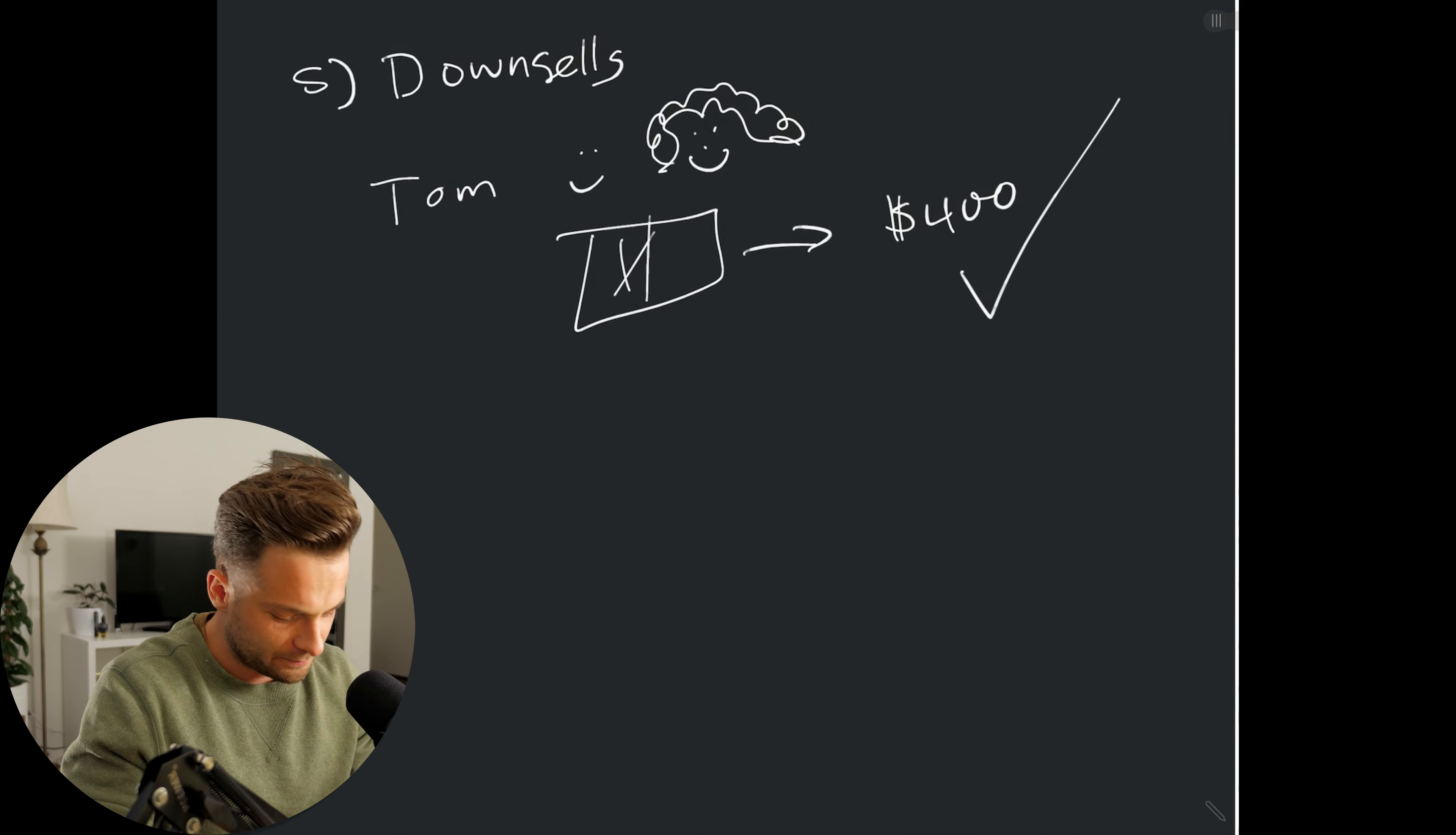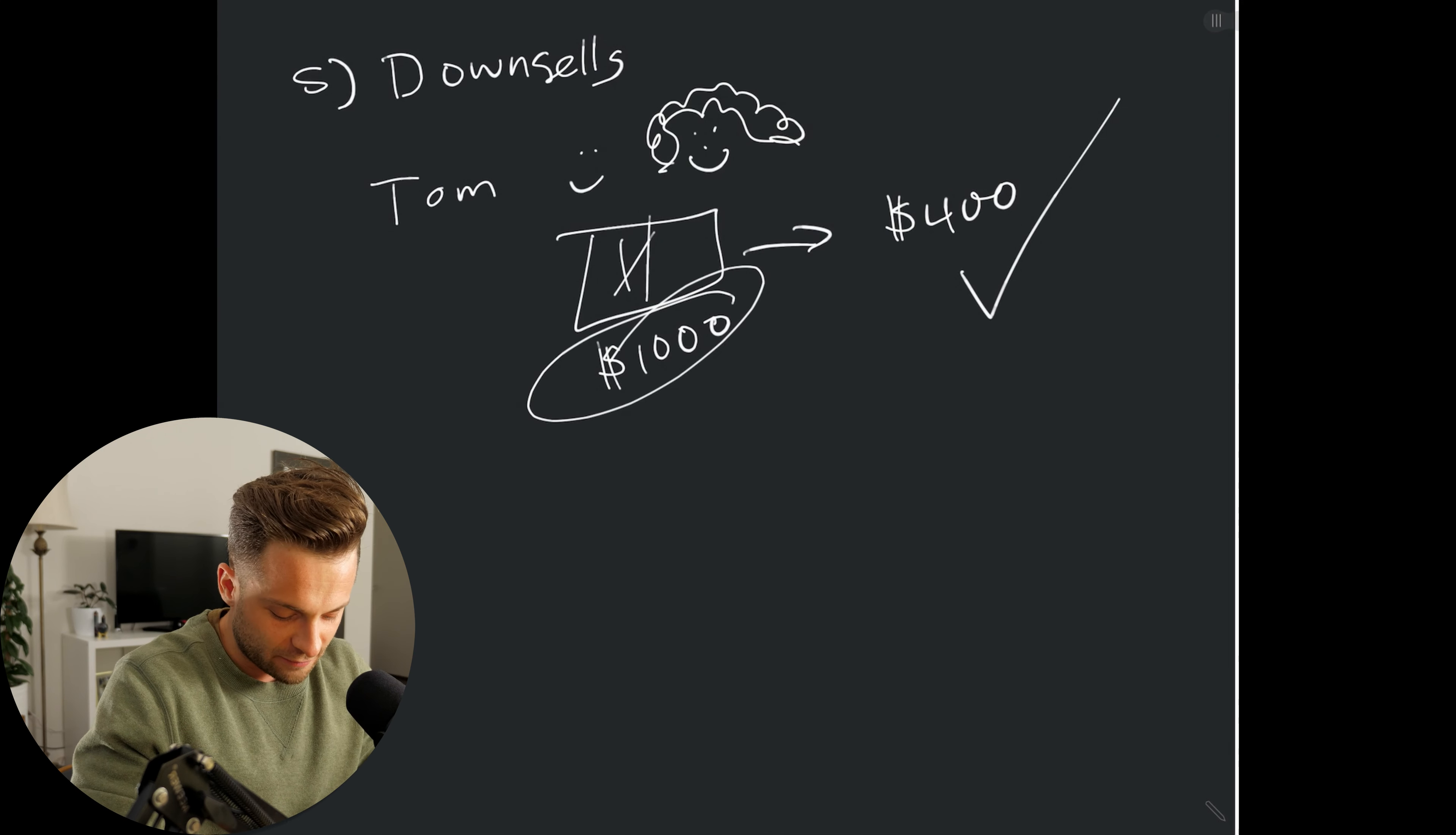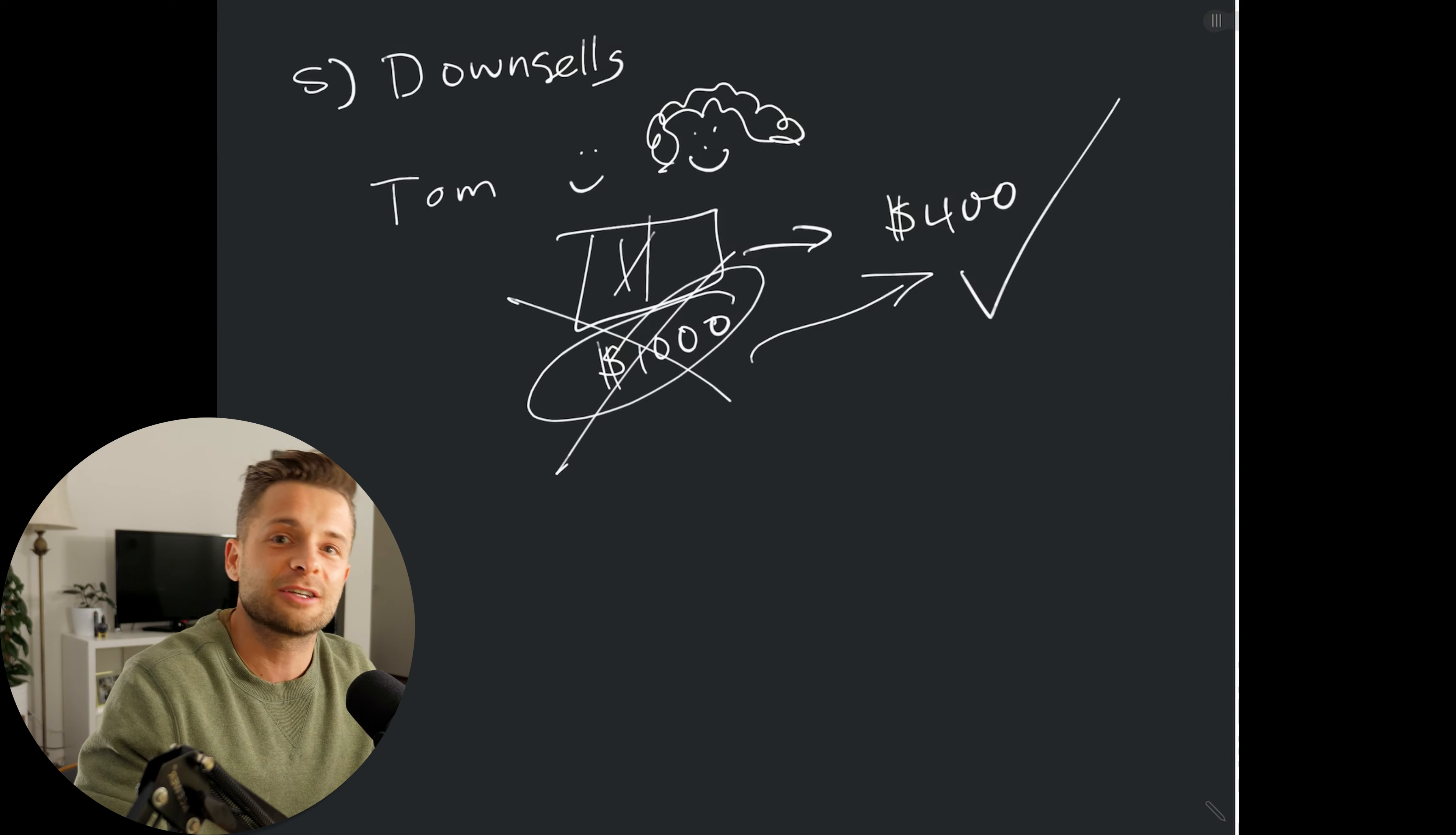And then Sam says, yeah. So what happened? Did Tom lose a $1,000 sale? Well, not really. This was an up-sell that he went for. And then when she said no, he made $400 by doing that down-sell. Okay, so if you don't have down-sells in your packages, that might be something you want to consider adding.